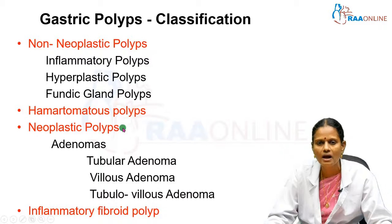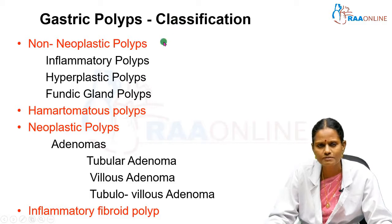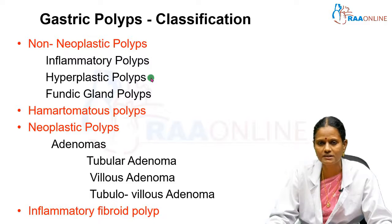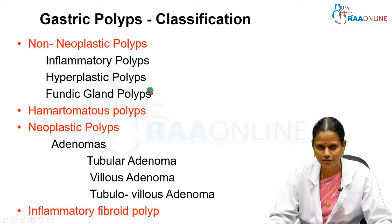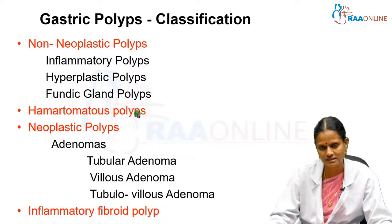Non-neoplastic polyps, of which inflammatory and hyperplastic polyps are the most common, constitute about 90% of all gastric polyps. Then come the fundic gland polyps. Hamartomatous polyps are more common in the intestine rather than the stomach.